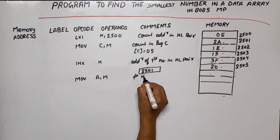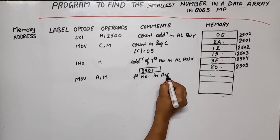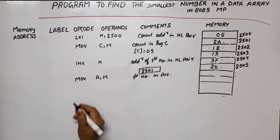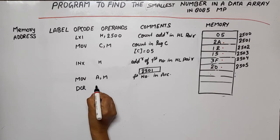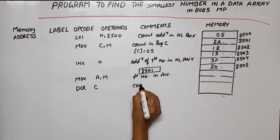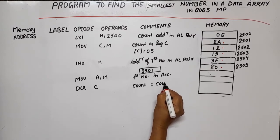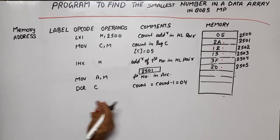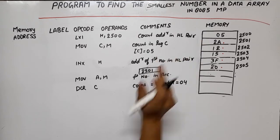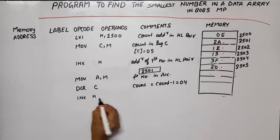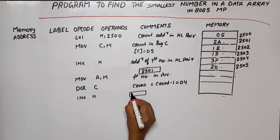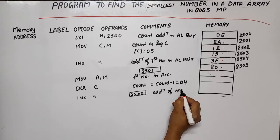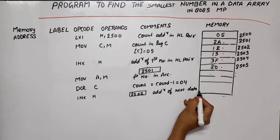Now we move the first number into the accumulator with MOV A,M. We have taken the count, so we need to decrement it. We write DCR C, which means count equals count minus one. For this case, it will be 04. Now for the second number, we need to compare it with 12. We use INX H, so the HL pair value becomes 2502, which is the address of the next data.